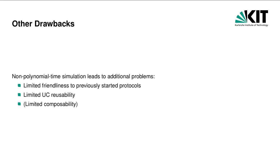Yet another drawback of previous approaches is limited UC reusability. Suppose we construct a composable commitment scheme that is SPS-secure. Due to the subpolynomial simulation, we cannot plug this commitment scheme into any UC-secure MPC protocol in the F-COM hybrid model, because the simulation can negatively affect complexity assumptions inside the MPC protocol. The reuse of UC protocols is thus limited. Our goal is a notion with full UC reusability. As UC security is closed under composition, it suffices to prove the security of one protocol instance; multiple instances retain security when executed concurrently. Other notions, such as angle-based security, are closed under composition but still suffer from limited UC reusability and limited environmental friendliness.